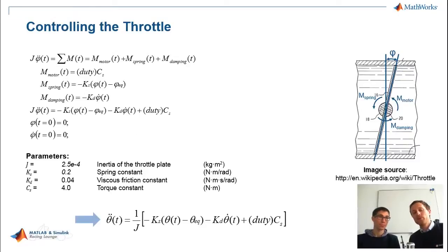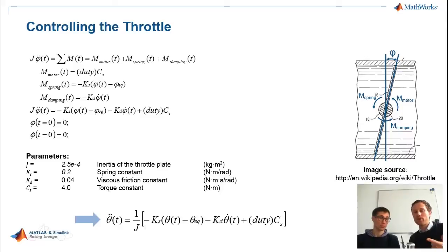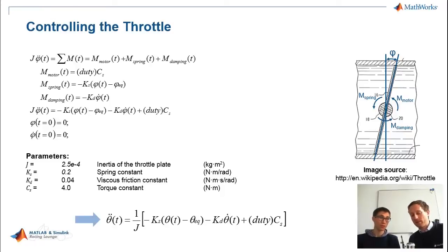We've already introduced this throttle example. You should not be scared about the equations we present here. What we assumed is we have a throttle valve with three torques acting on it: first, the spring that always pulls the throttle back to its initial position; second, the torque of the motor; and third, a damping behavior — something like friction, which can occur in every mechanical system. All the equations are written down and resolved for theta double dot, which is important to set up the model.